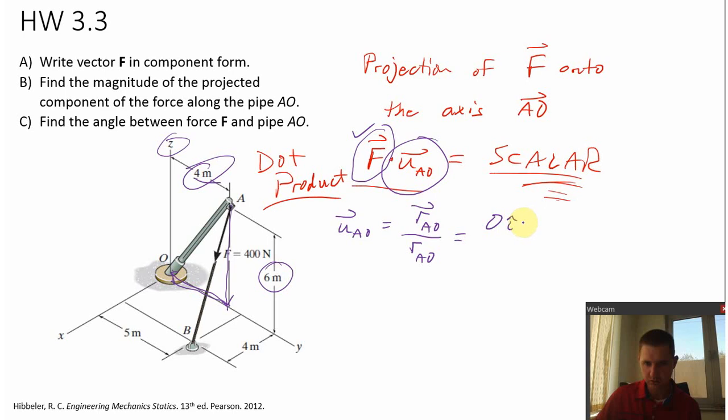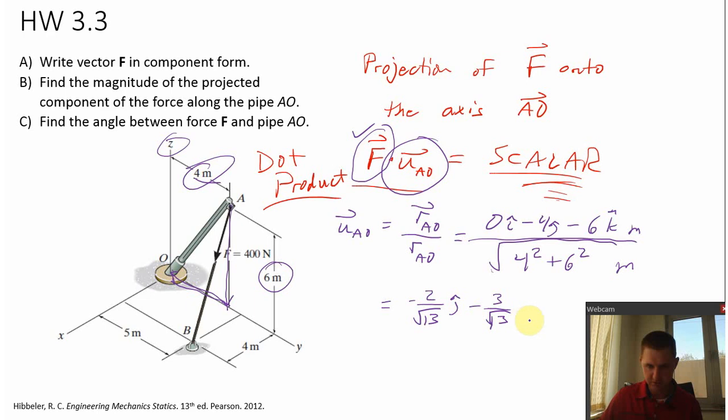J-hat was minus four and k-hat is minus six k-hat meters divided by the magnitude of that vector. Four squared plus six squared meters. And I have the unit vector there. So this comes out to be minus two over radical 13 J-hat and minus three over radical 13, 13 there. Let me write that better. K-hat.